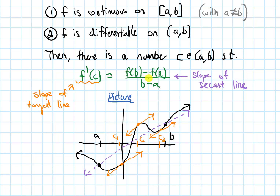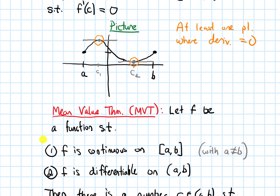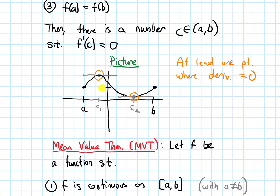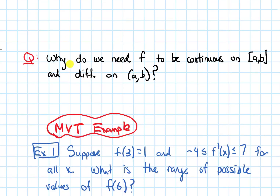Thinking about both sides of this as slopes, Rolle's Theorem is actually just a special case of the Mean Value Theorem. If I go back to Rolle's Theorem and draw in the secant line connecting the point at a and the point at b, that secant line is just perfectly flat — it has a slope of zero. So it's a very special case of MVT, where the tangent lines are parallel to that flat secant line. I'm not going to give a proof of either theorem because I want to focus more on applying them, and the geometric intuition is equally valuable.